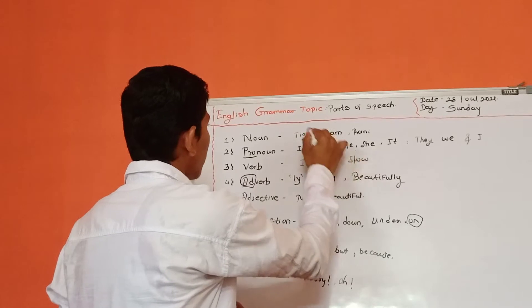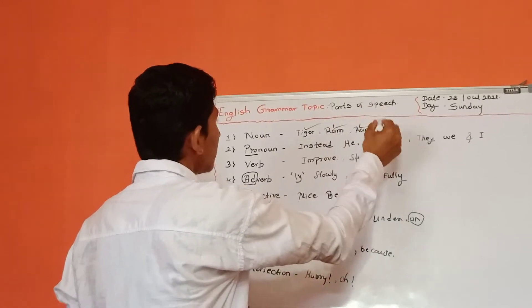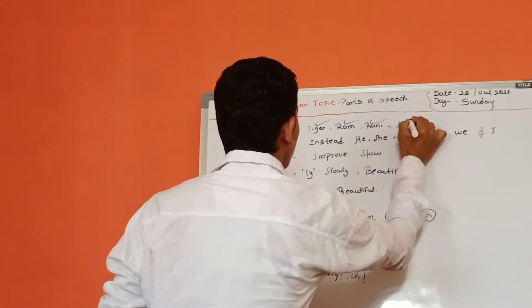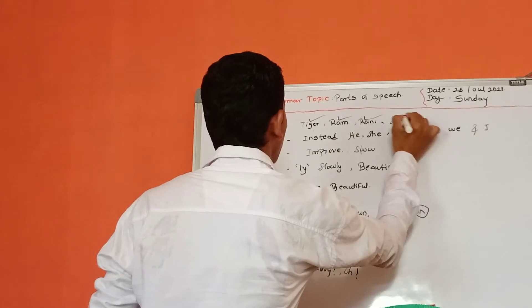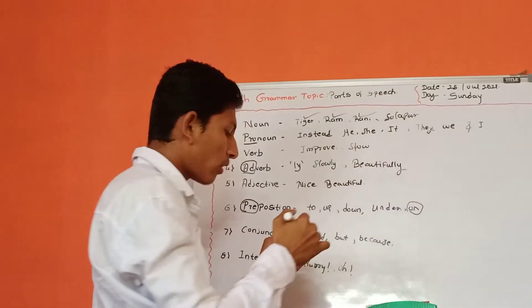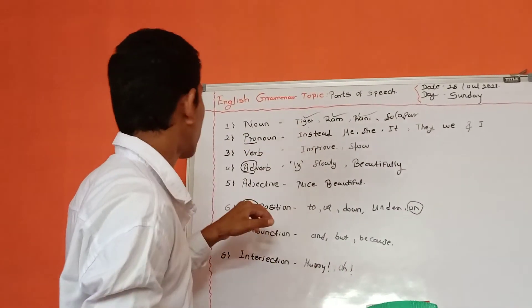Tiger is there, Ram is there, Rani is there, and Solapur is there. These all are called Nouns.